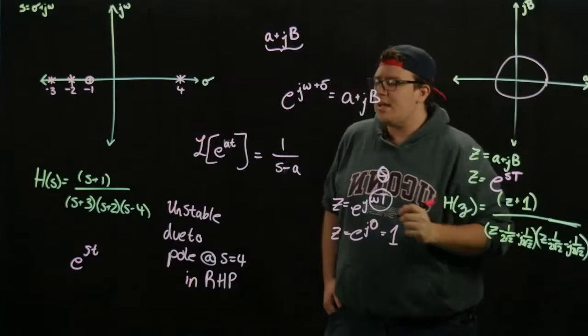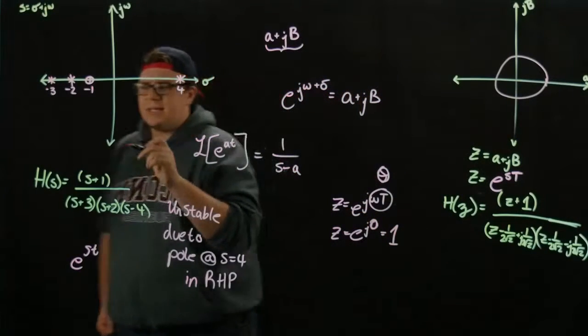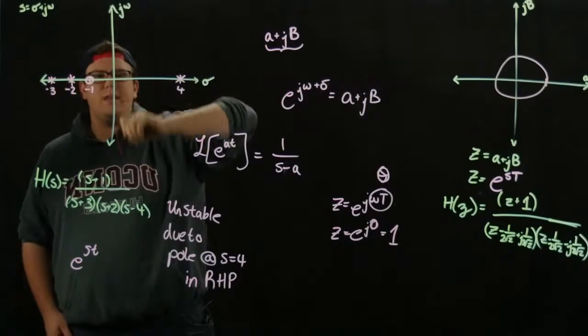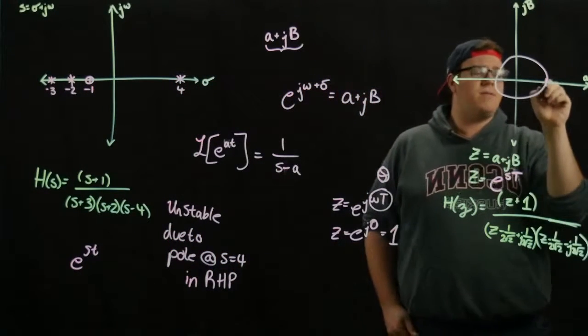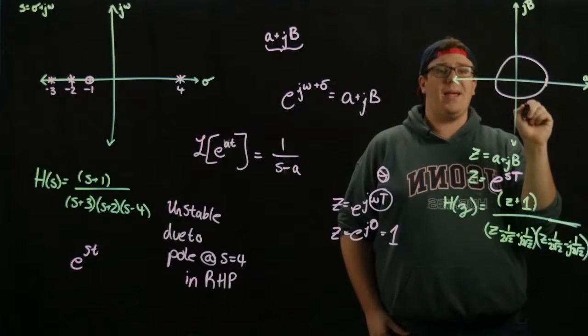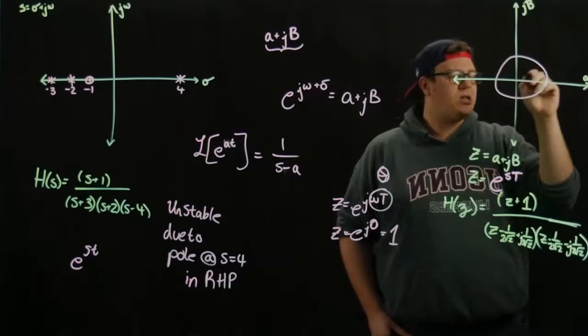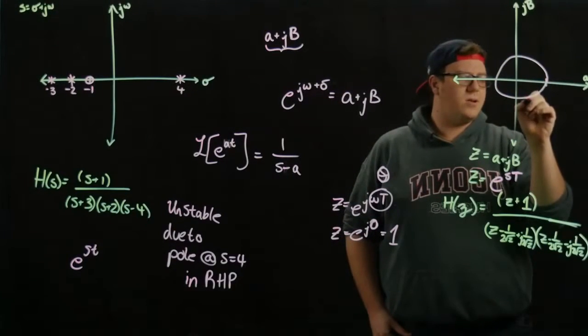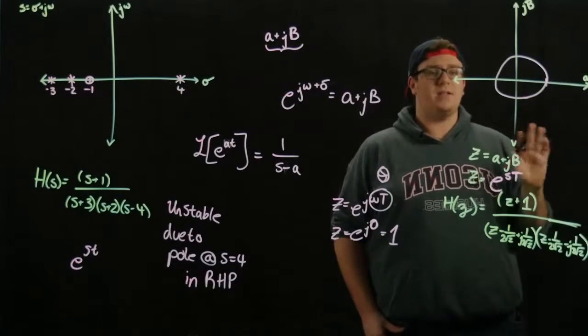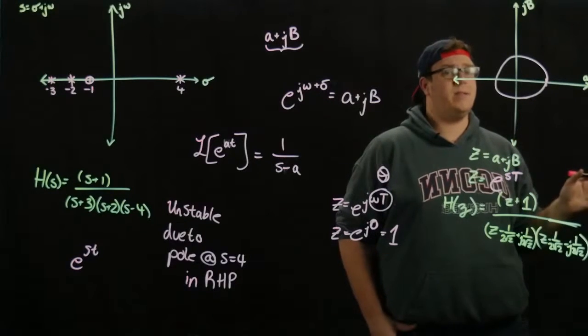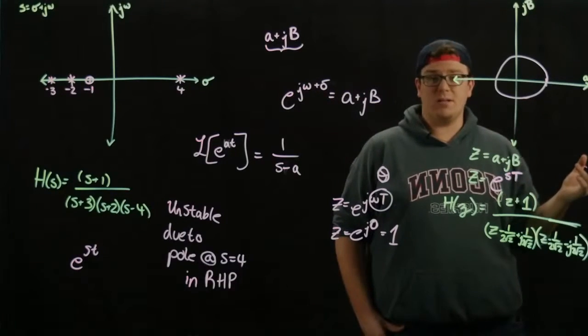Because the j omega axis is the definer of stability here, that tells us that the definer for stability in the Z plane is actually just the unit circle. So if your poles are inside the unit circle, then your system will be stable. And if your poles are outside the unit circle, then they will be unstable.